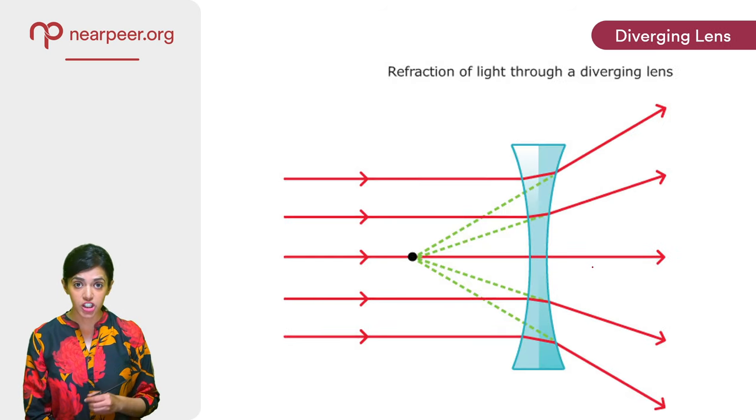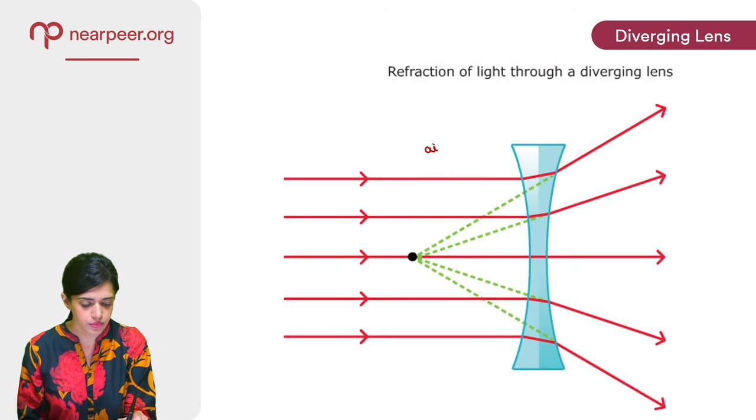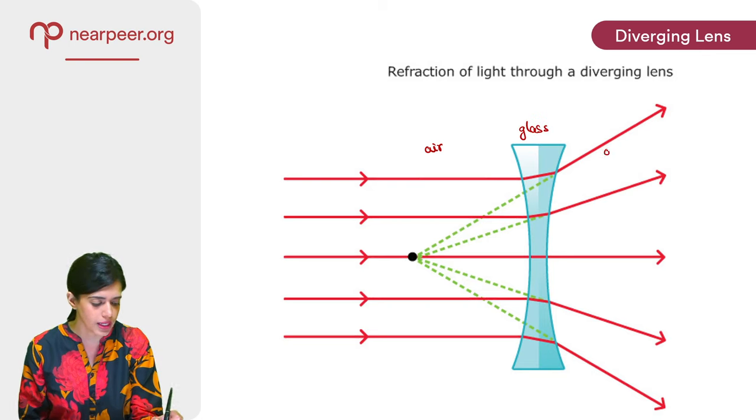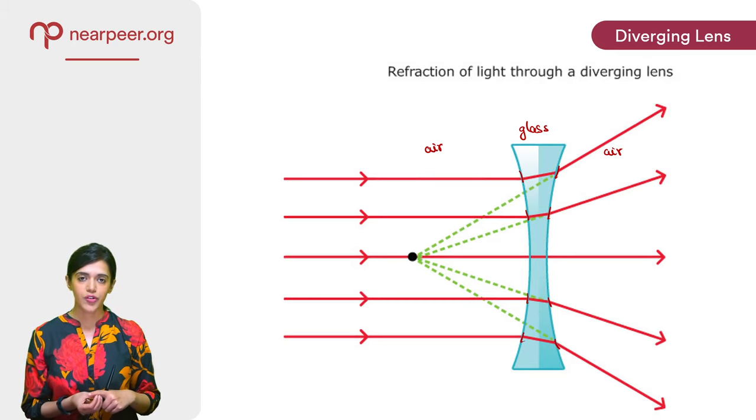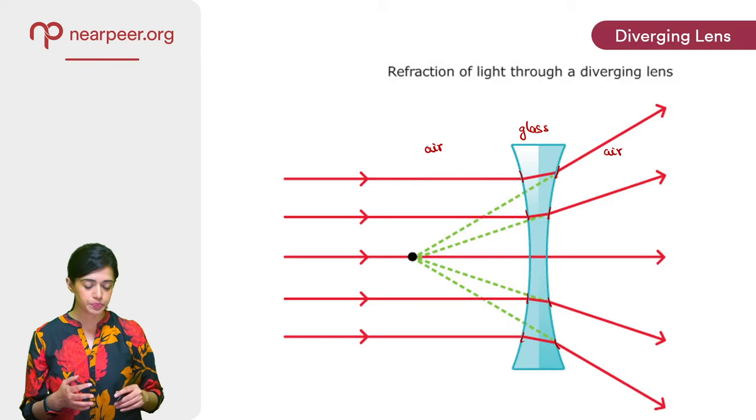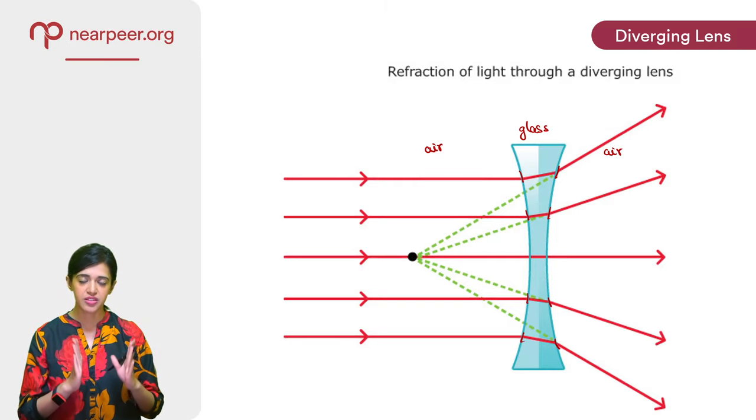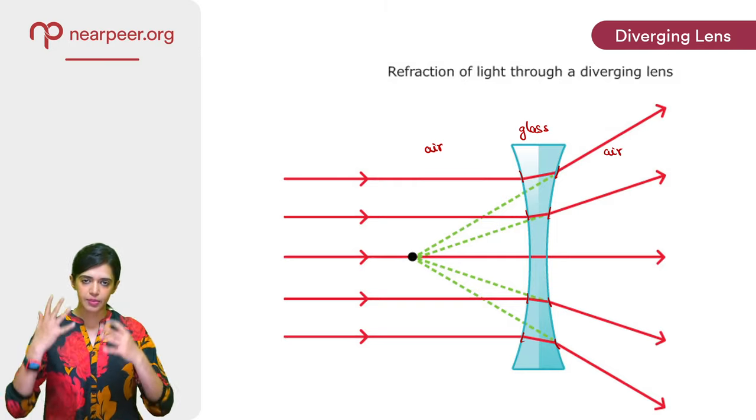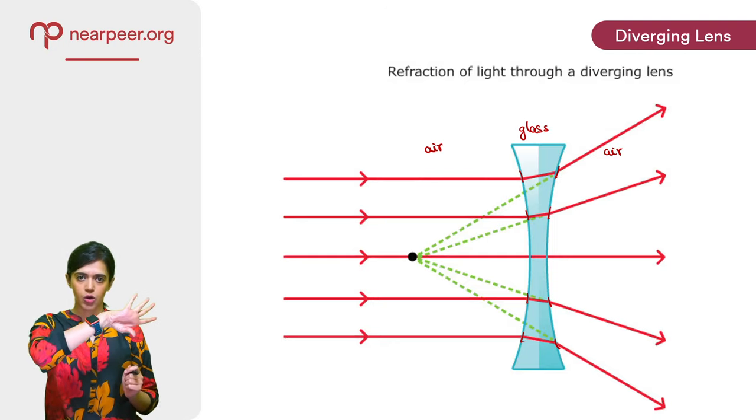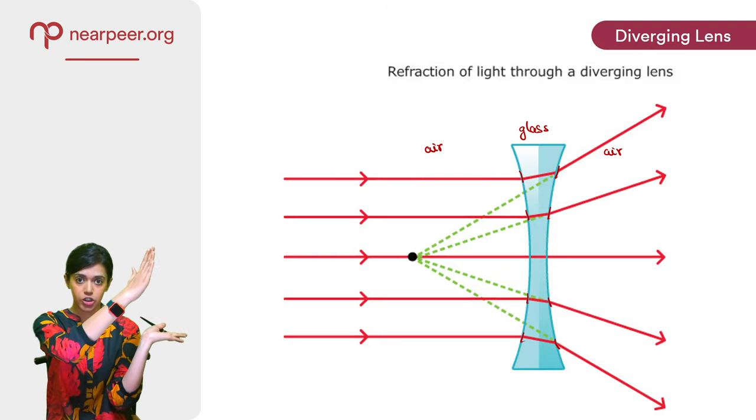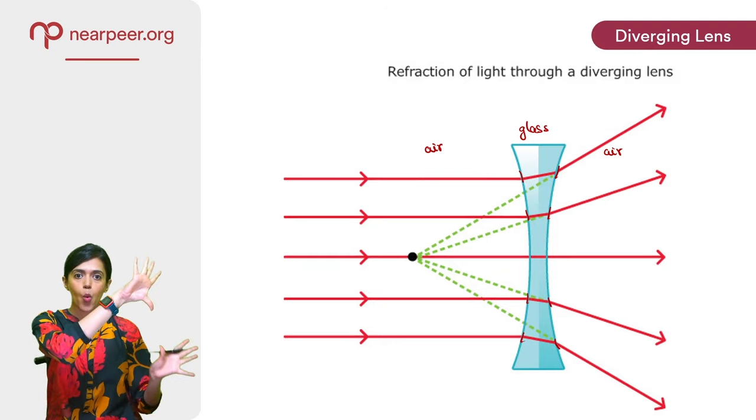The diverging lens does the opposite of that. Once again, light enters glass from air and when it leaves it goes from glass into air. So refraction takes place at both boundaries, at all of these boundaries. But in this case, the refraction is such that due to the shape of the lens, the parallel rays of light that were incident on the diverging lens, they fan out. So they are not converging to a point, they are diverging. They are fanning out, they are pointing away from each other.